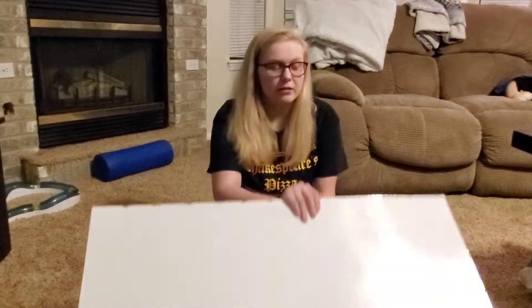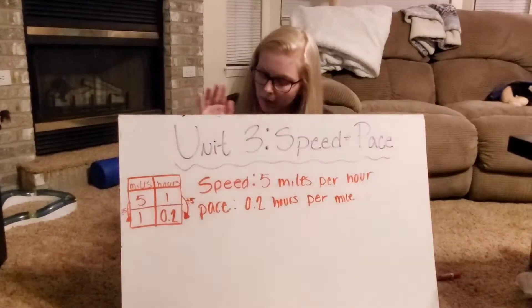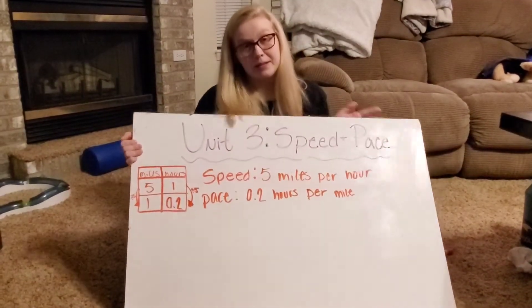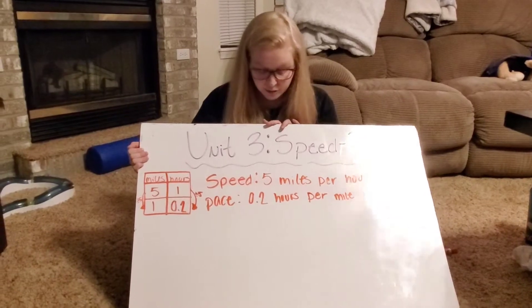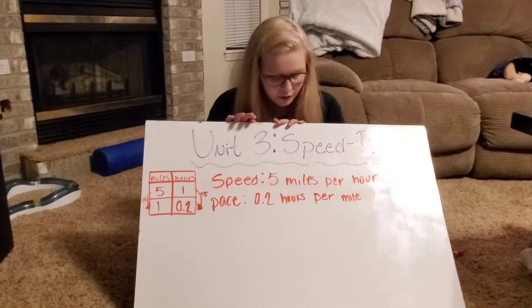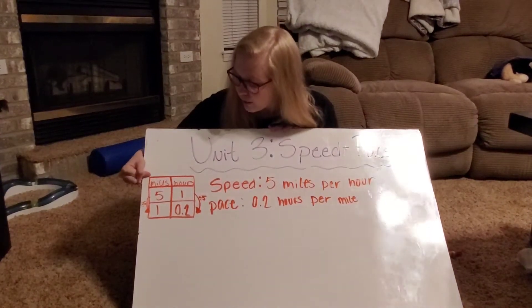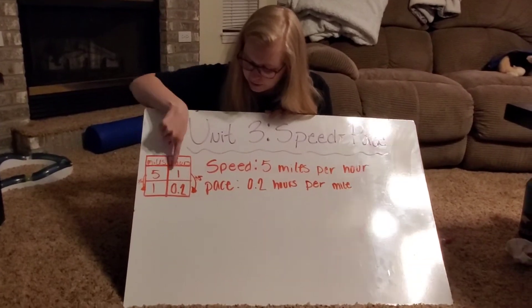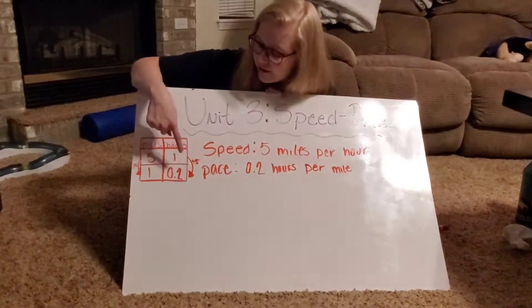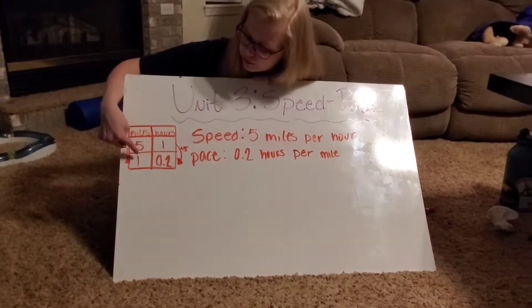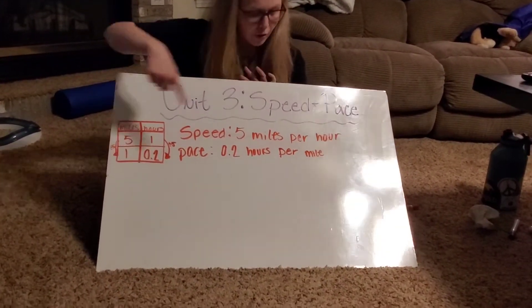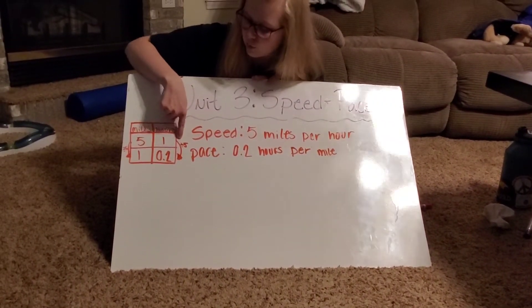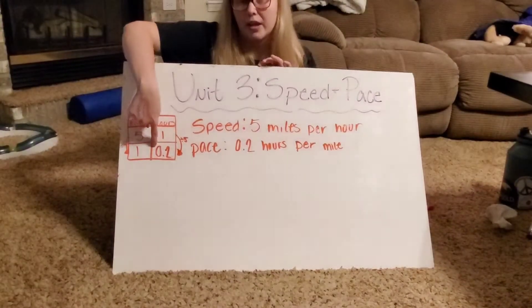And then pace — let me actually show you this. I have a speed of 5 miles per hour, and then the pace of that is actually 2 tenths of an hour per mile. I'll show my work here in a table. I have miles and hours. If I have 5 miles per hour — remember, per means 1 — then if I want to get down to where there's only 1 mile, because per mile, I'm going to divide by 5. Then I'm going to divide 1 by 5, and I get 2 tenths.